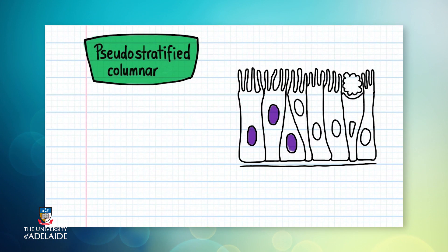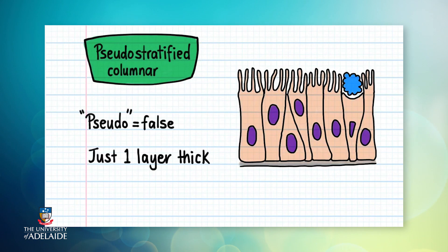This is what pseudostratified columnar epithelium looks like. Pseudo means false or fake. The epithelium looks stratified, but it's actually not. There is only one layer of cells present because all of the cells touch the basement membrane.